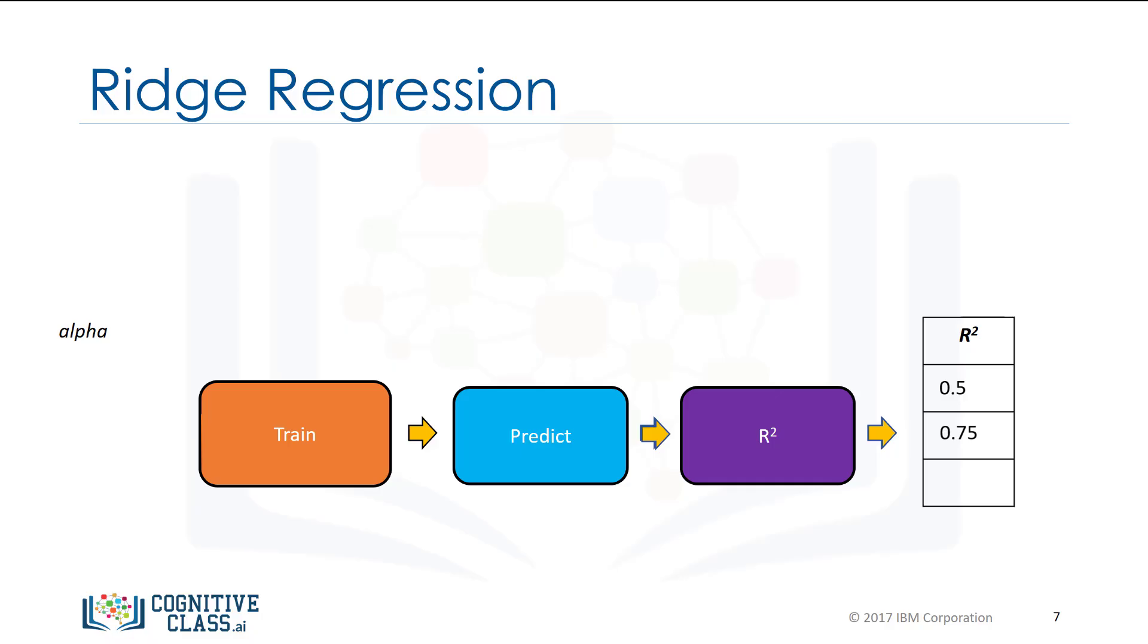We repeat the process for a different alpha value, training the model and making a prediction. We select the value of alpha that maximizes the R squared. Note that we can use other metrics to select the value of alpha, like mean squared error.